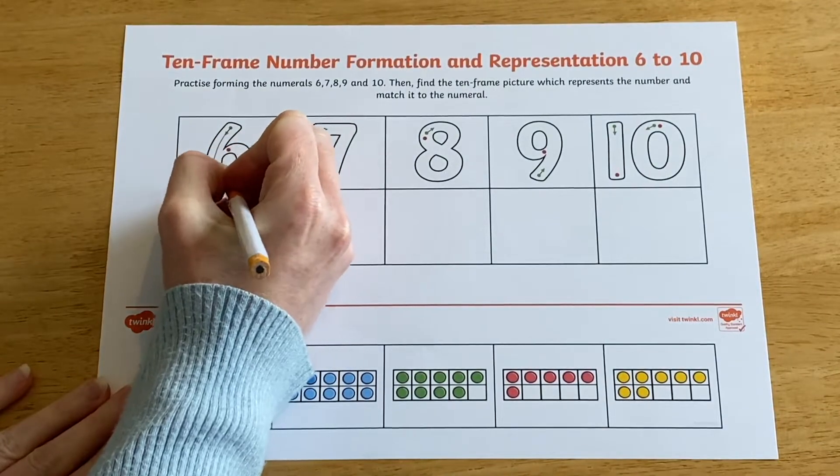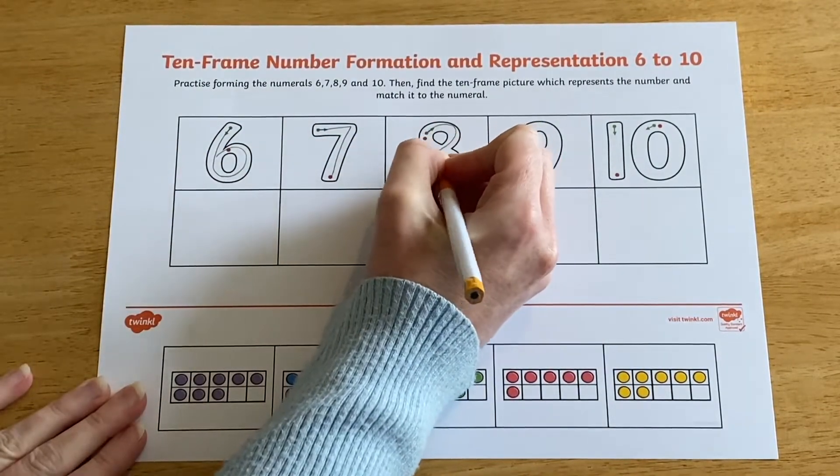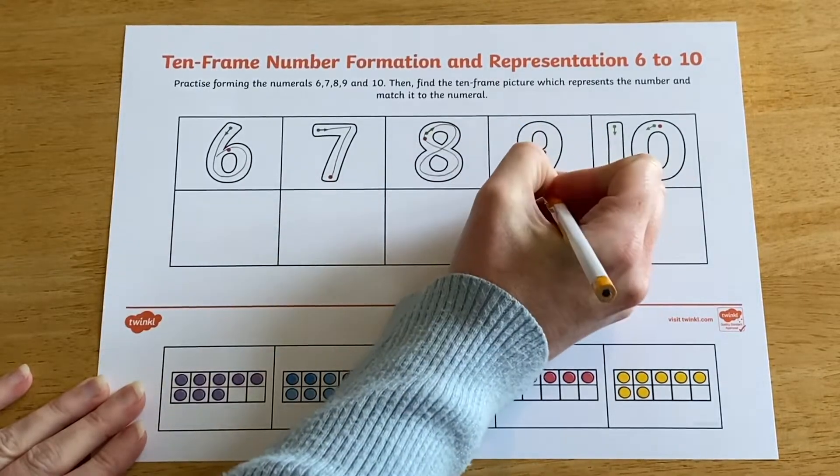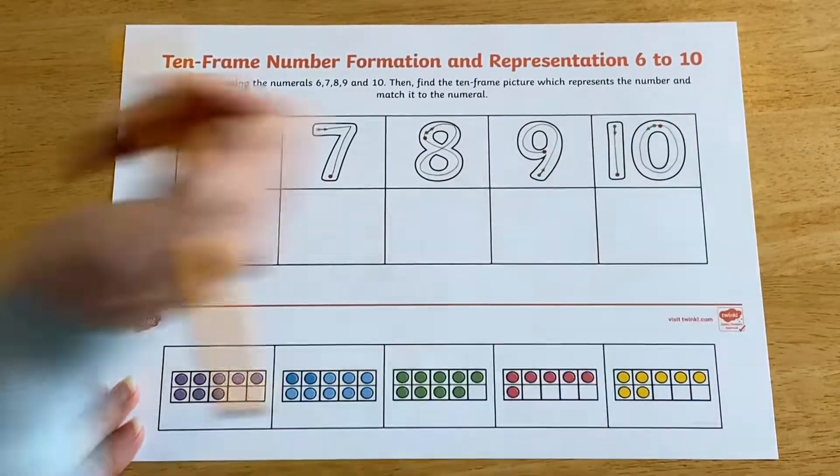Children can begin by following the arrows on the numbers to correctly form each number. The resource is available with different versions of numbers to suit whichever number style you use in your setting.